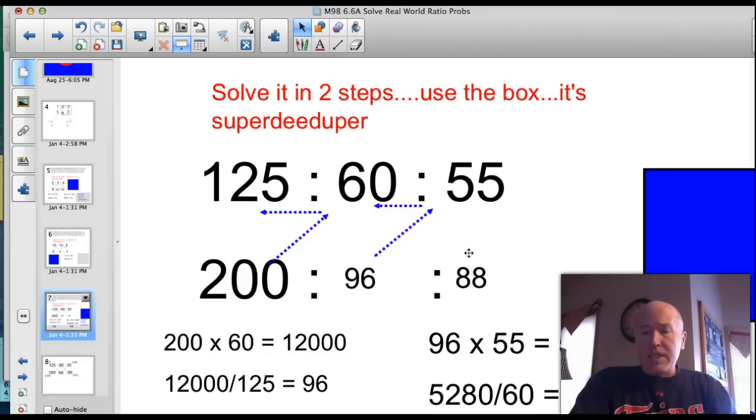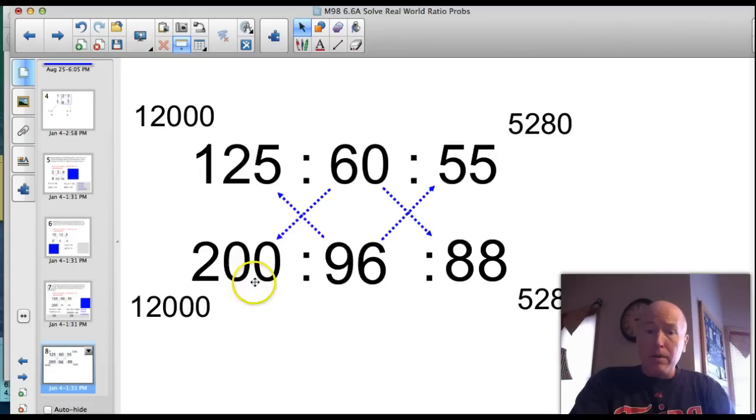That's kind of complicated. On a problem like that, you need to check your cross products. And here's the way I did it for you. I just did 96 times 125. That's 12,000. 60 times 200 is 12,000. And then I looked over on this side because here's my second set of ratios. 60 times 88 is 5,280. 96 times 55 is 5,280.